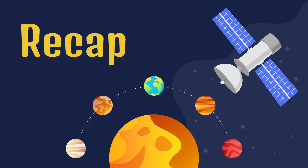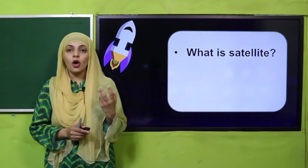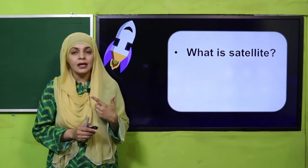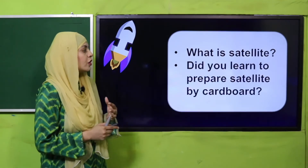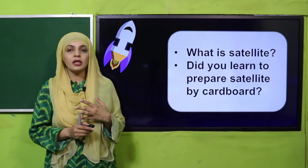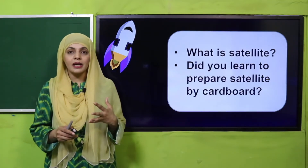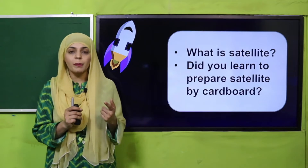Before that, let's quickly recap what we did in the previous lecture. My dear students, what is a satellite? An object that is revolving around the planet is called a satellite. Did you try to make a satellite at home through a cardboard or a piece of paper?